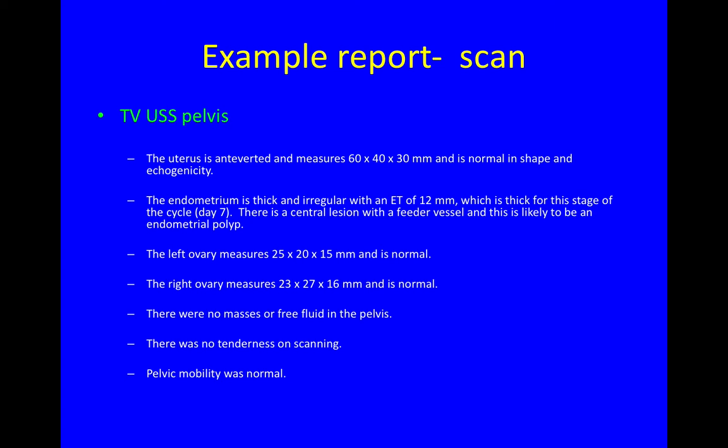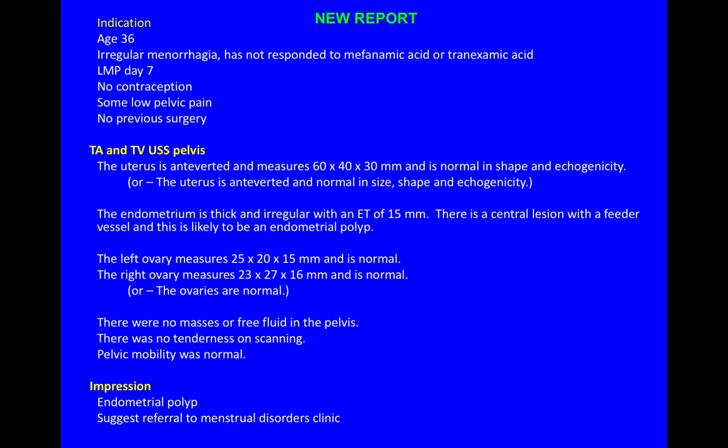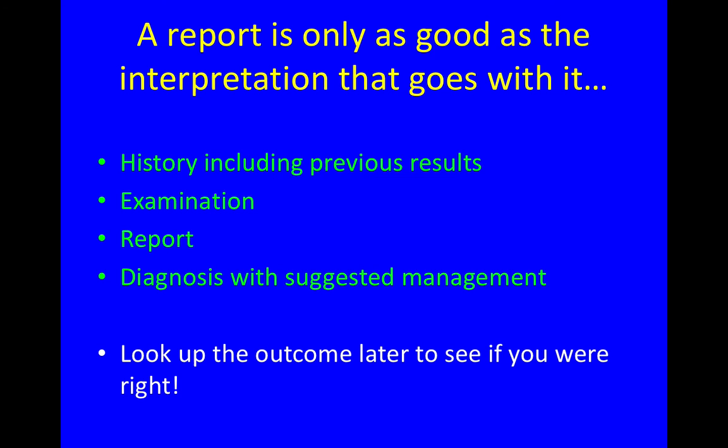Looking more carefully, there was a central lesion with a feeder vessel, likely to be a benign-looking endometrial polyp. The ovaries looked normal, there were no masses or free fluid, no tenderness, and pelvic mobility was normal. The original report was not that informative, but our new report includes an impression of an endometrial polyp and a suggestion to refer the patient to the menstrual disorders clinic.